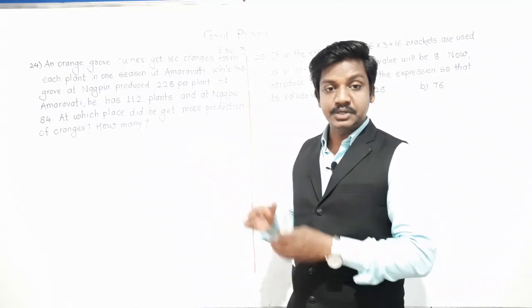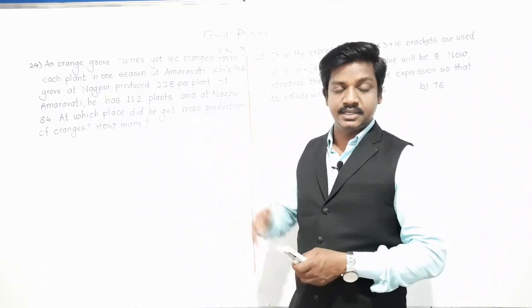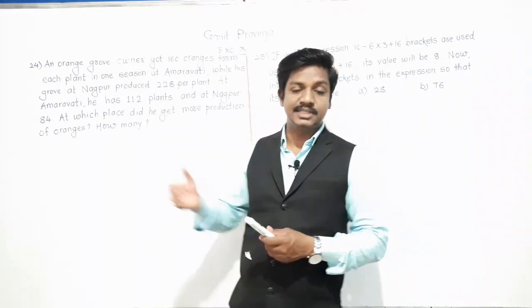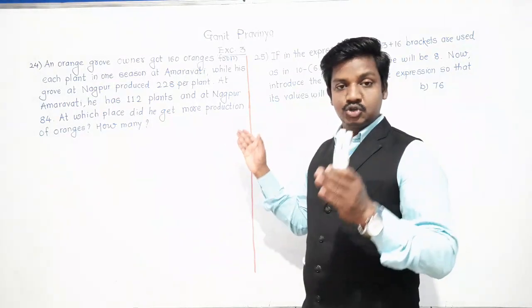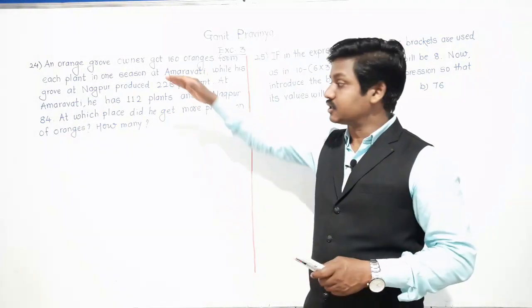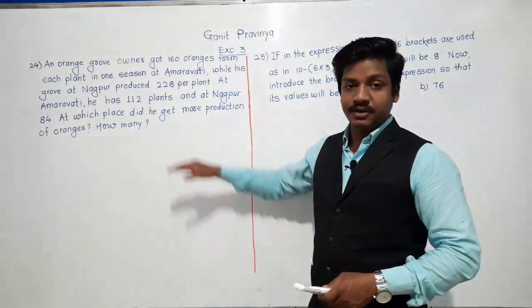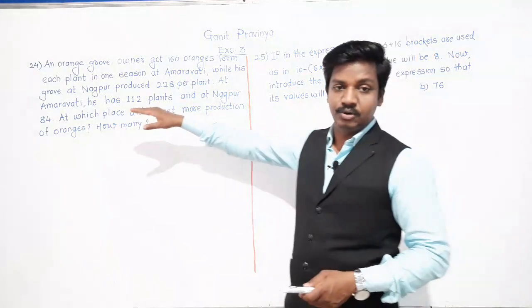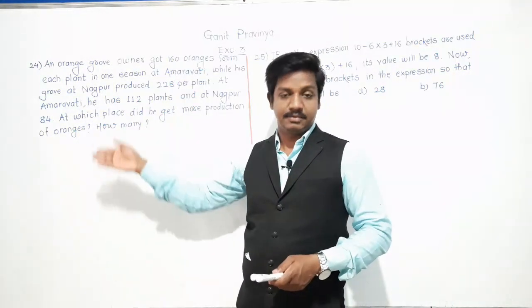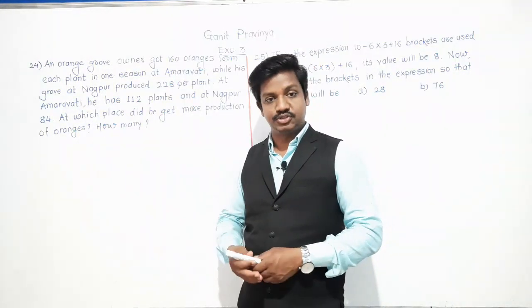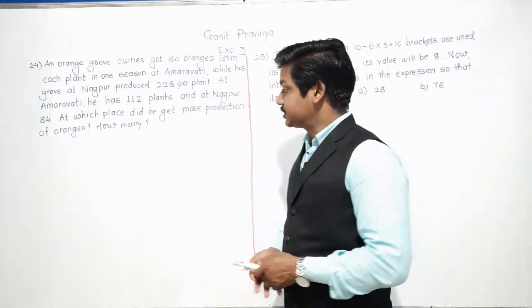Here we have to compare the production of oranges obtained at two places — Amravati and Nagpur — just as we did in problems 16 to 22. We compare two expressions. First we will form expressions and then compare by finding the solution.